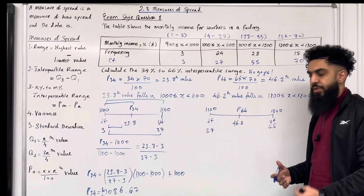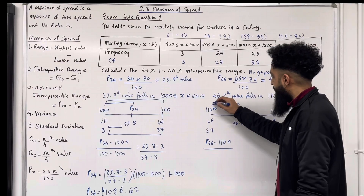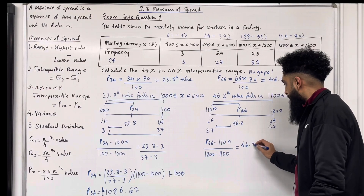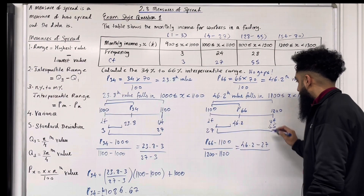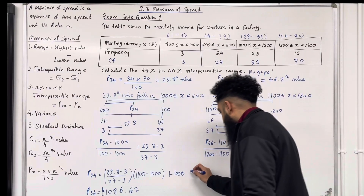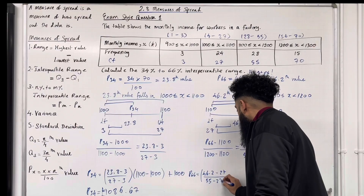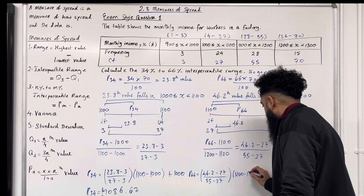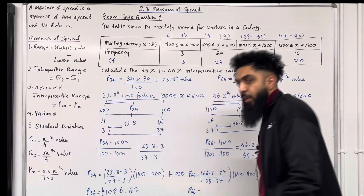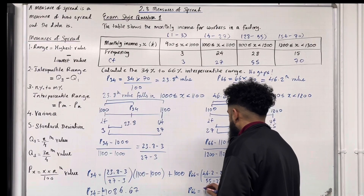Assuming the class intervals are uniformly distributed, we have: (P66 minus 1100) divided by (1200 minus 1100) equals (46.2 minus 27) divided by (55 minus 27). Rearranging, P66 equals (46.2 minus 27) divided by (55 minus 27), multiplied by (1200 minus 1100), plus 1100. Putting this into the calculator and rounding to the nearest penny, we get £1,168.57.